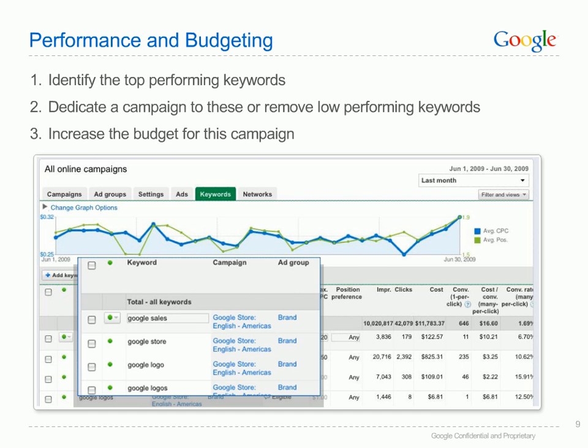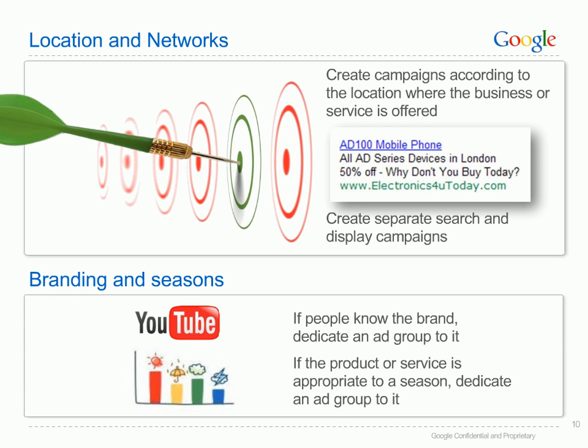Separate ad groups may be created whenever you'd like to set different maximum CPCs for keywords that may be highly competitive or that convert less. Geographic location: if your business serves several areas, you might create a separate campaign for each. For example, an advertiser who sells wine in France and toy kangaroos in Australia may create campaigns that target each country individually. For multi-country accounts, each campaign should be localised to the local language and should emphasise that services are available in that country. If you're running a promotion in one specific city, you might decide to create a campaign that targets that city only.